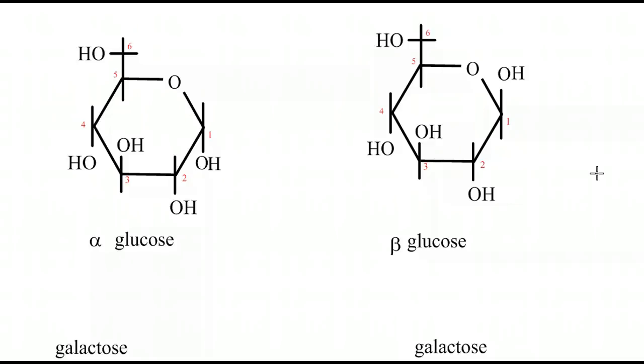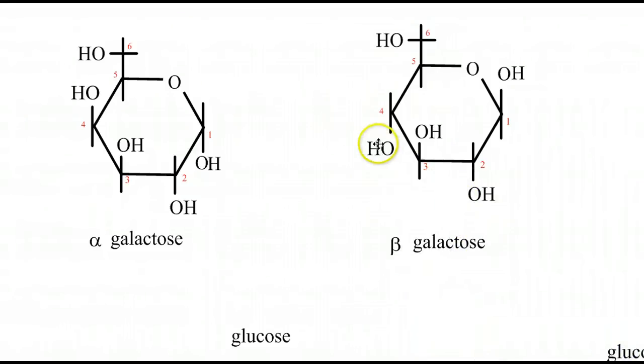The next monosaccharide is galactose, which is also C6H12O6. To draw it, all we have to do is take the hydroxyl on the number four carbon and move it to the up position. So alpha galactose, instead of being down, down, up, down like alpha glucose, is actually down, down, up, up. Same thing for beta. To make beta galactose, we simply take the hydroxyl and put it in the up position on the number one carbon - it's the only place we go from alpha to beta. So there's alpha and beta galactose.